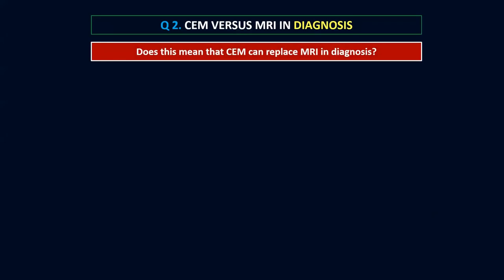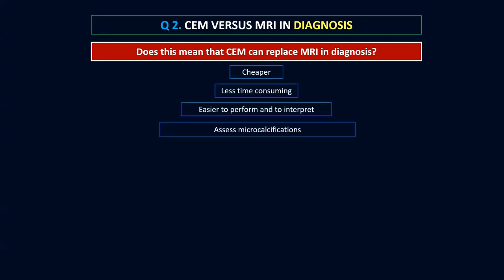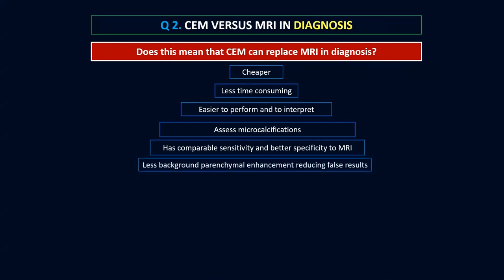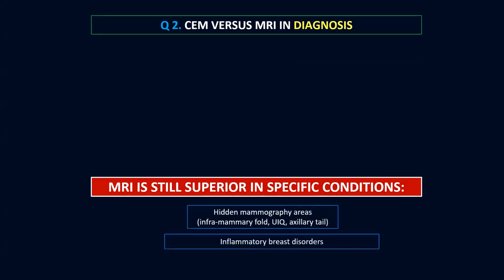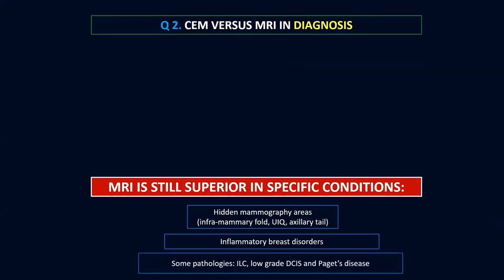Putting things together for question two: can contrast mammography replace MRI in diagnosis? Yes, because it is cheaper, less time consuming, easier to perform, allows assessment of microcalcifications, has comparable sensitivity and even better specificity to MRI, and we have less background parenchymal enhancement reducing false positives. But we must know our limitations — MRI is still superior for deeply seated lesions, inframammary fold lesions, axillary tail lesions, inflammatory breast disorders, invasive lobular carcinoma, and Paget's disease. But so long as you have contrast mammography, put it as the first category in your examination.